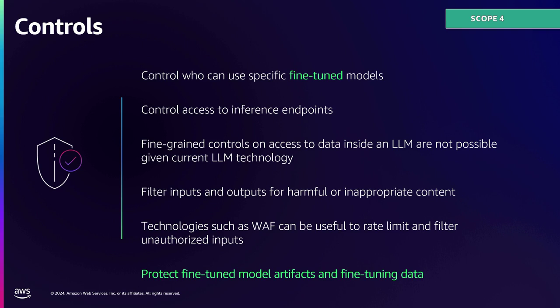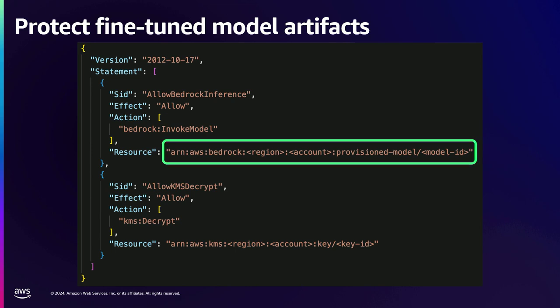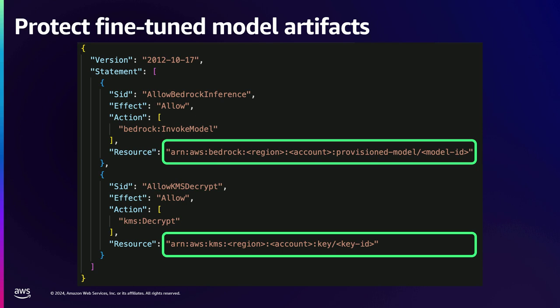With AWS, if you're using Bedrock for model hosting, you can protect your fine-tuned models efficiently using IAM. Here's a snippet of an IAM identity policy with two actions. The first grants access to a customized model — when you customize a model, you get a model ID, so you can be very granular and say a specific identity can invoke a specific model, denying all others. The second action lets you encrypt those customized models using AWS KMS keys you control, so someone needs permissions to both the model and the key to successfully run inference. IAM and KMS are effective controls to protect customized models in Bedrock. Different services will have different capacities, so check what you can use to protect your models in other services.